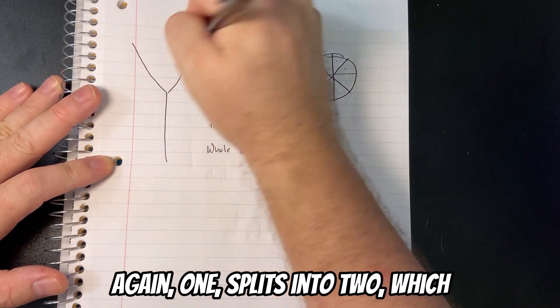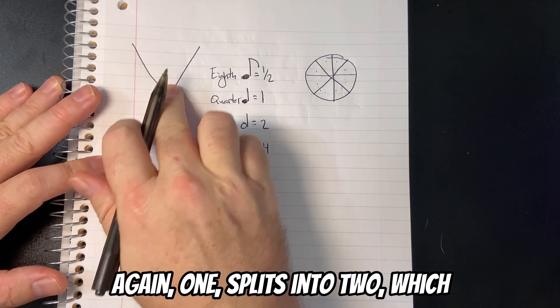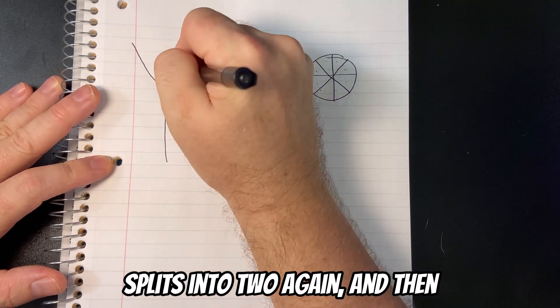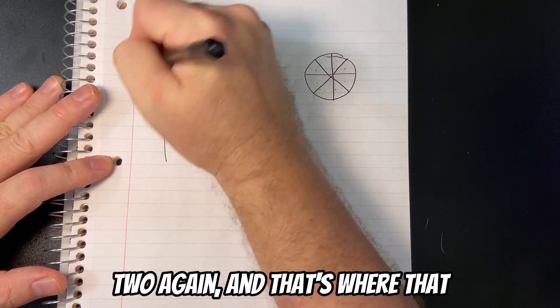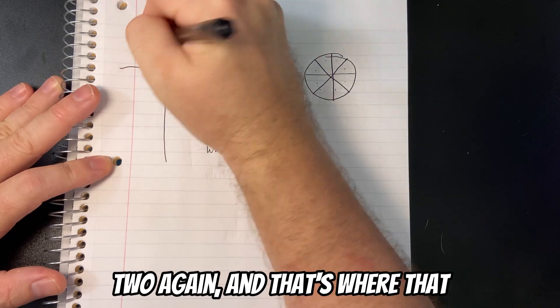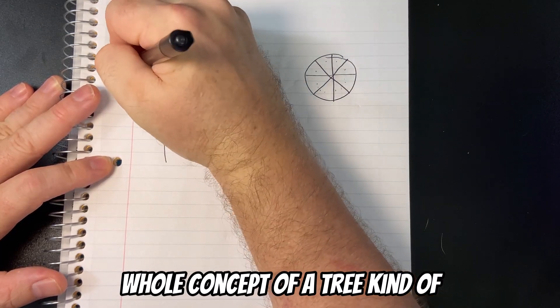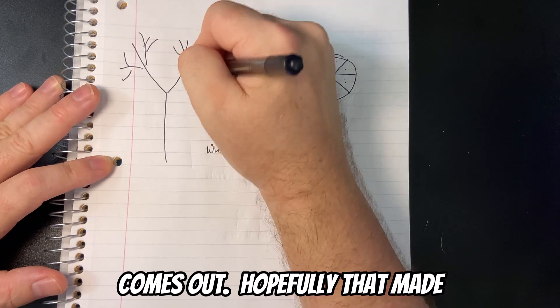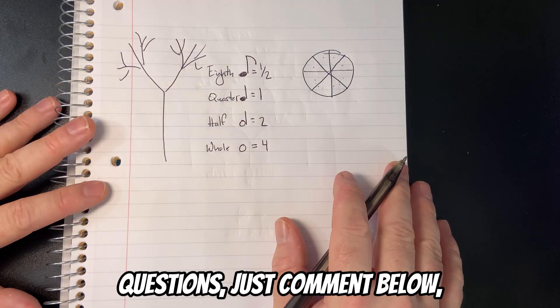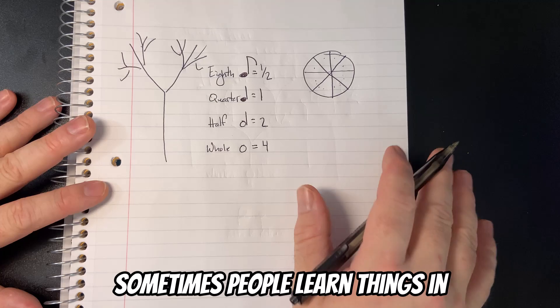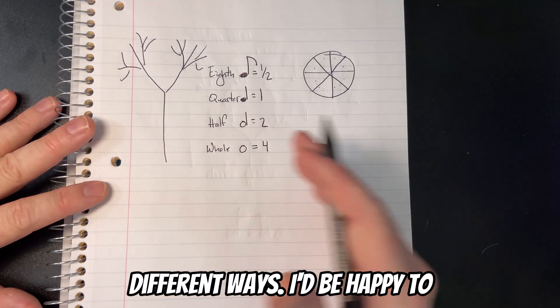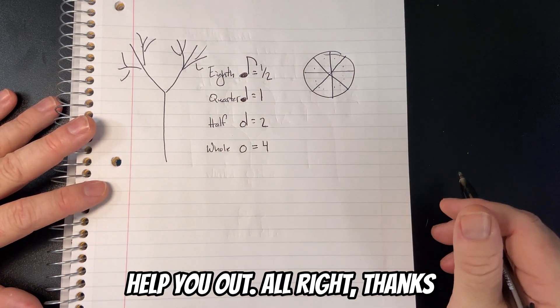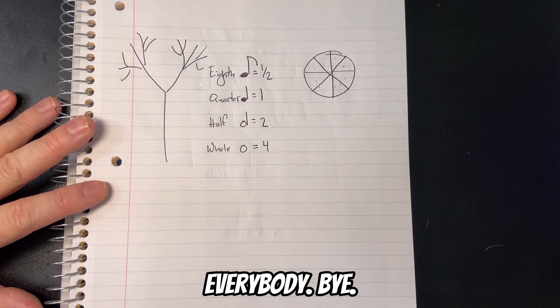And again, one splits into two, which splits into two again, and then two again. And that's where that whole concept of a tree kind of comes out. If you have any questions, just comment below. Sometimes people learn things in different ways. I'd be happy to help you out. All right. Thanks, everybody. Bye.